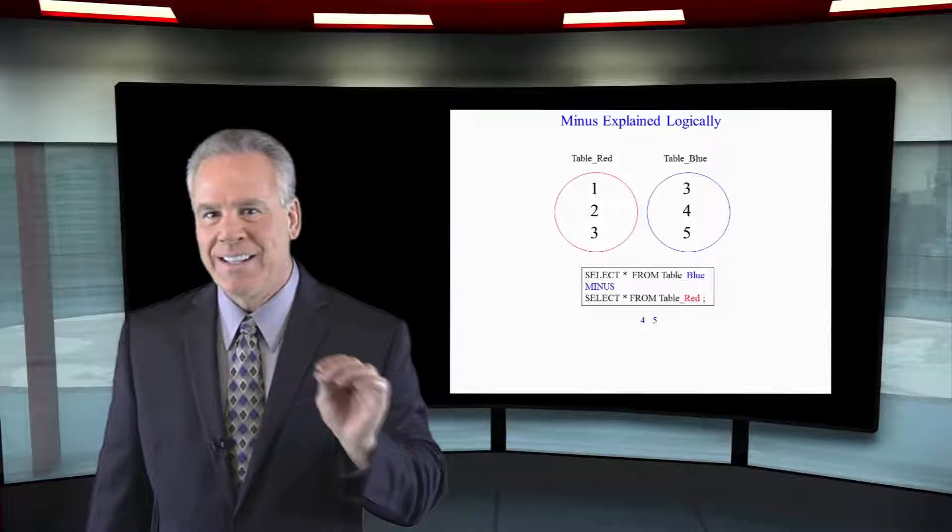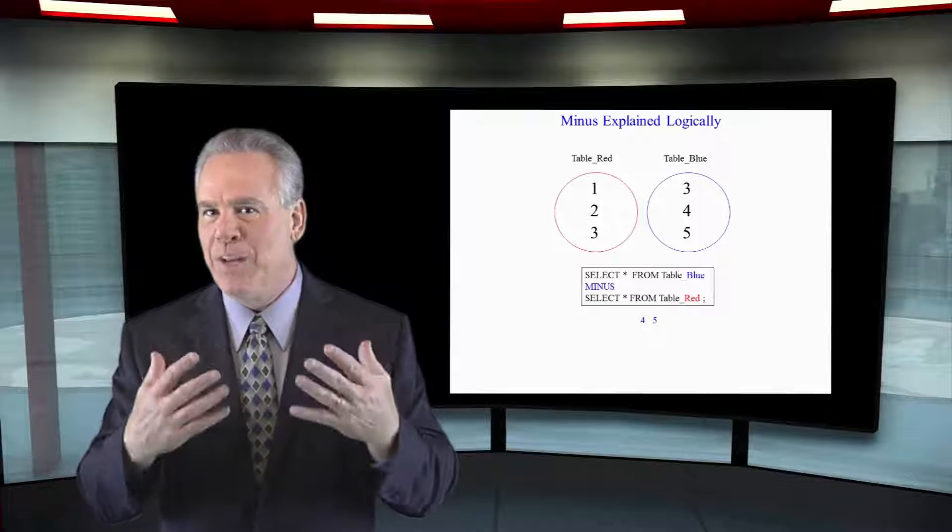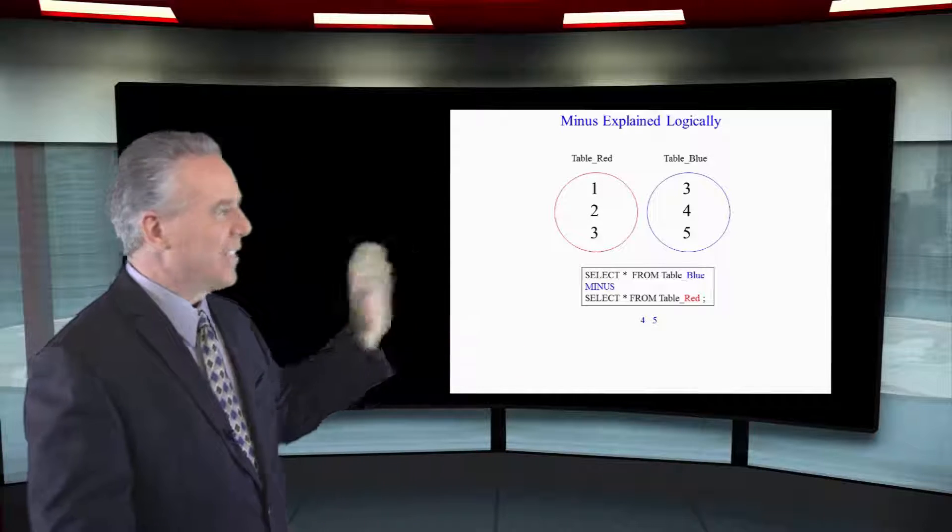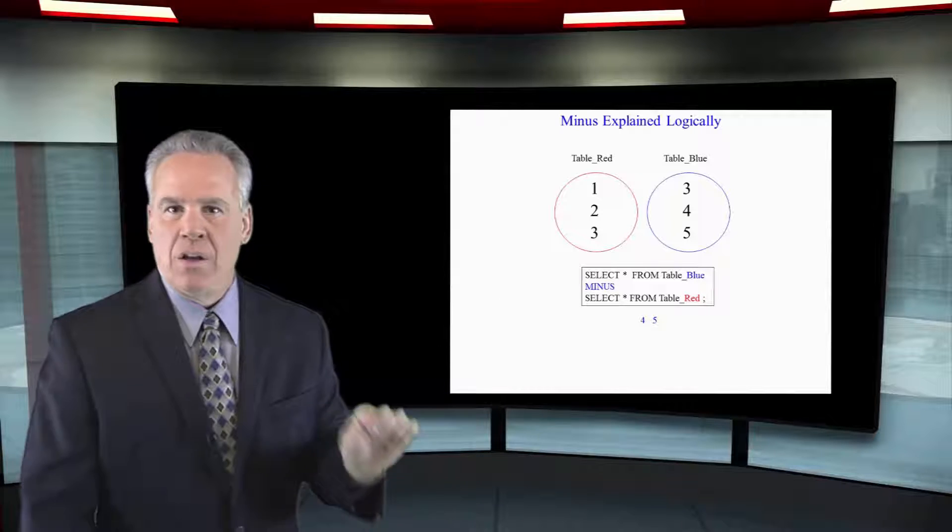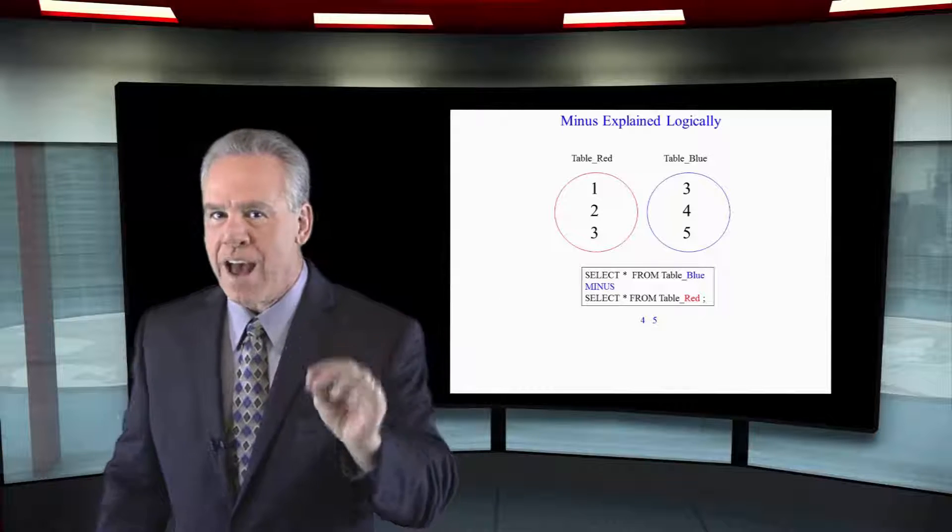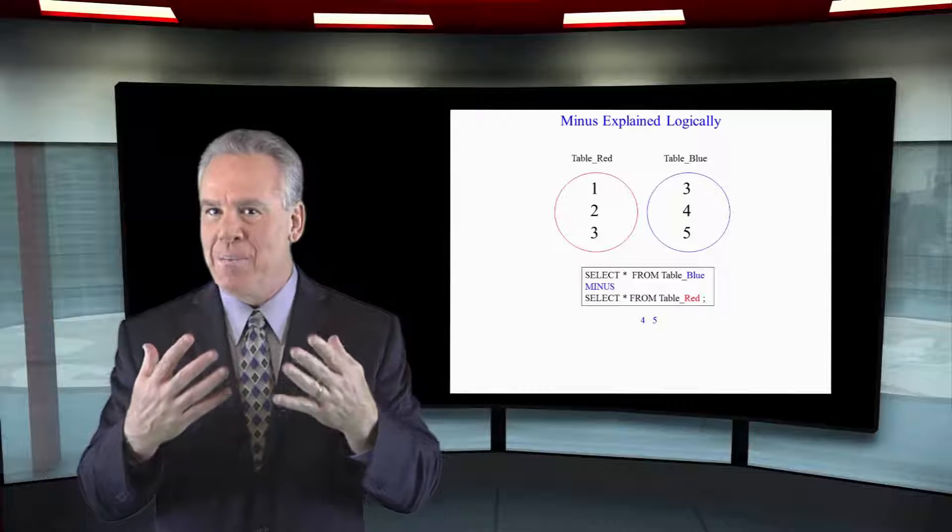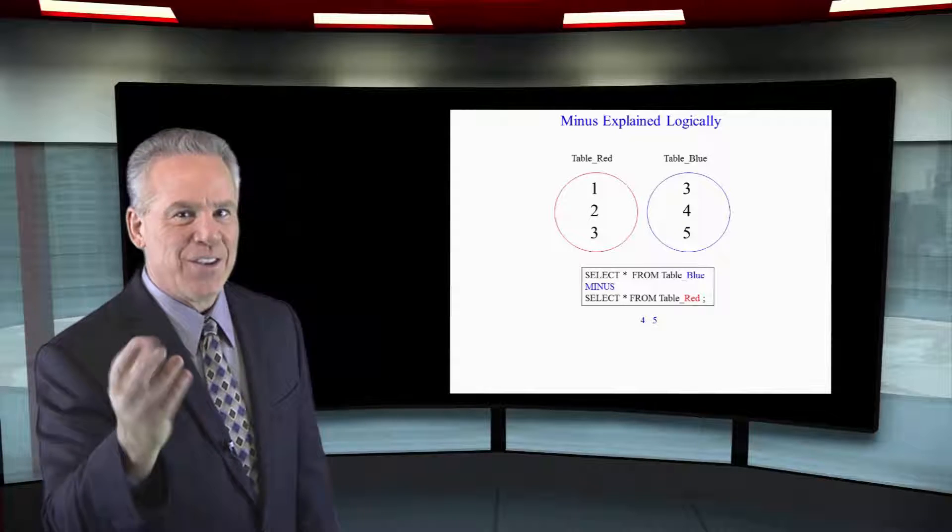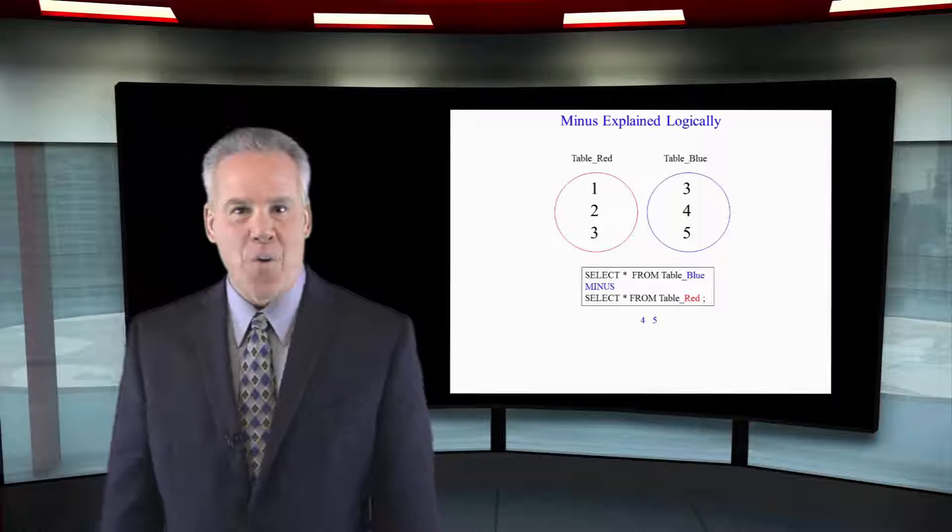Because select everything from table blue is the first query at the top, and then we say minus select everything from table red. Only three, four, five has the potential to come back unless it's in the other table red. So, our answer, four, five.